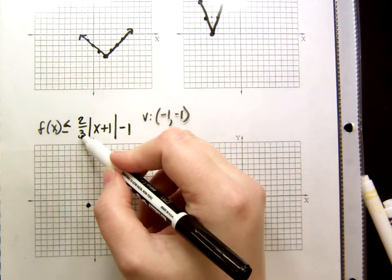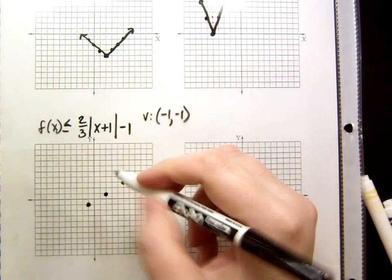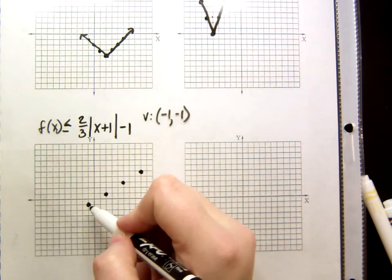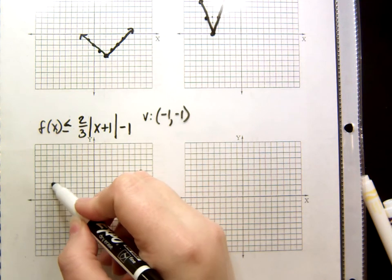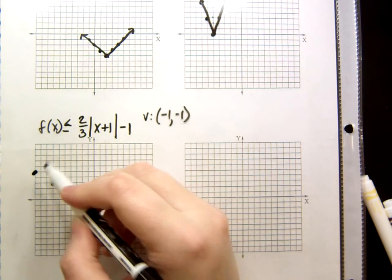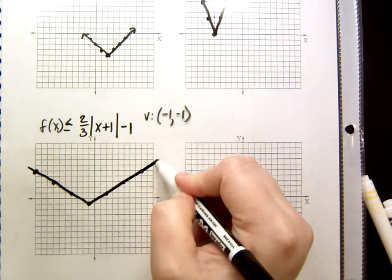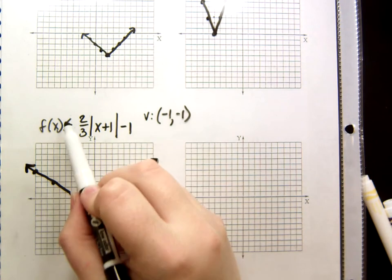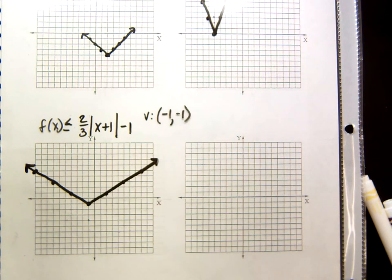2 thirds is the slope of my right side. So, up 2 over 3, 2 over 3, and I'm going to go all the way to the as far as I can, because I need to extend the lines out for my shading purposes. And then on the left side, I go up and left. Now, because this is less than or equal to, I connect my dots with a solid line. And the last thing I do is shade. This is less than, so I shade below my vertex. So, I am going to be shading down here.